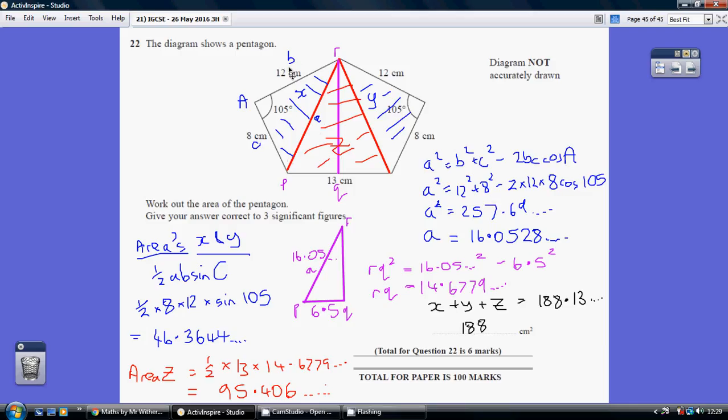This blue lettering here is to support this cosine rule working. So I've got angle A, and I've got little b and little c. So substituting into that, I can work out that this length here, which is RP, also little a, is 16.0528.